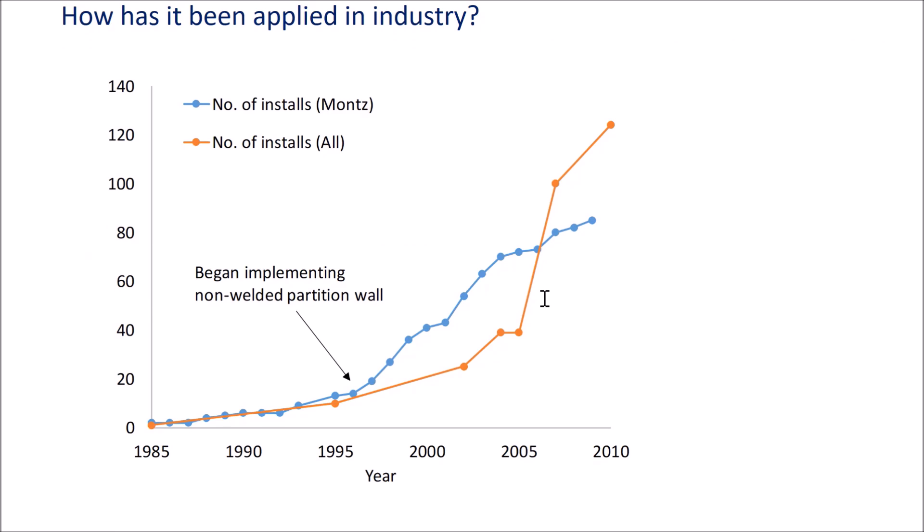So has this been adopted by industry? The answer is yes. Dividing wall columns are one of the more mature examples of PI technology.